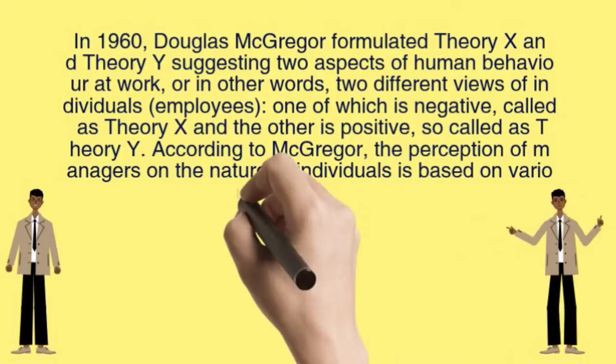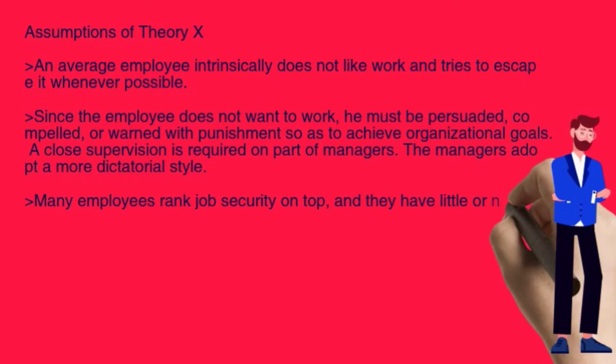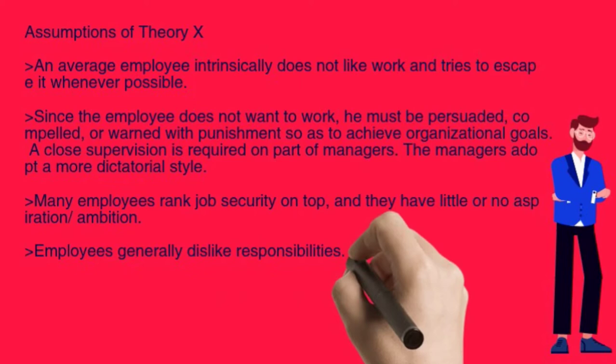In Theory X, an average employee intrinsically does not like work and tries to escape it whenever possible. Since the employee does not like work, he must be persuaded, compelled, or warned with punishment so as to achieve organizational goals. Many employees rank job security on top, and they have little or no aspiration or ambition. Employees generally dislike responsibilities, resist change, and an average employee needs formal direction.